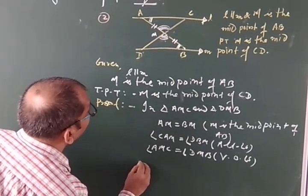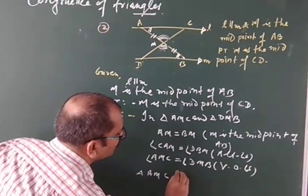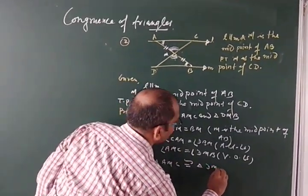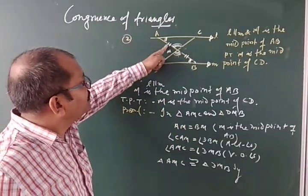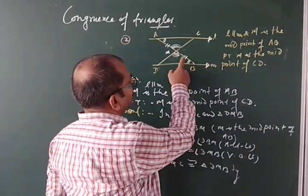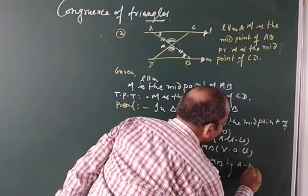After that, you can write triangle AMC congruent to triangle BMD. Why? Angle side angle. So it will be congruent by angle, side, angle.